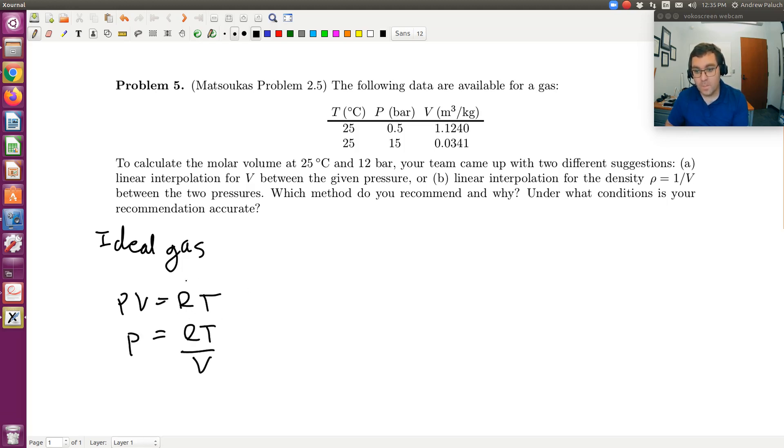So what that tells me is that P is going to be proportional to one over V, which is just density, right? The inverse of molar volume or specific volume would just be density. So P is proportional to rho.